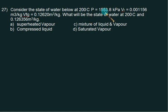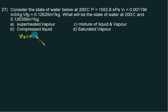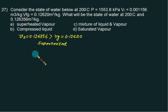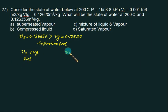Consider the state of water at 200°C where pressure, Vf, and Vg are given. The specific volume V2 is given as 0.126356, and the corresponding Vg value is 0.126. Since V2 is greater than Vg, the steam is superheated — for superheated steam, V_sup = Vg × (T_sup / T_sat). For comparison: if V > Vg, the steam is superheated; if V < Vg, it is wet steam.